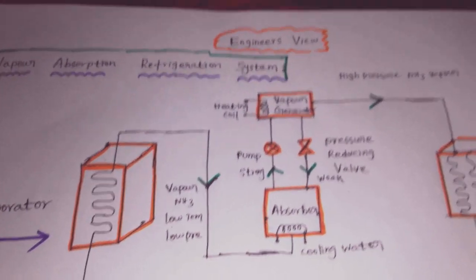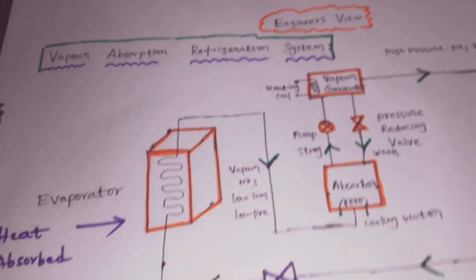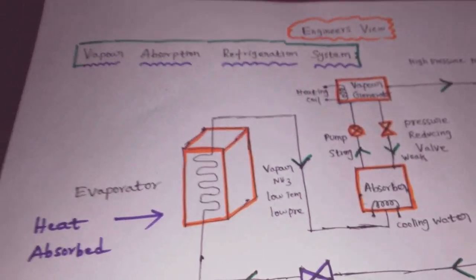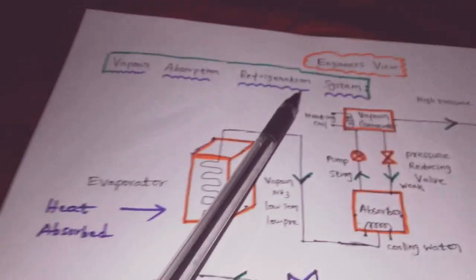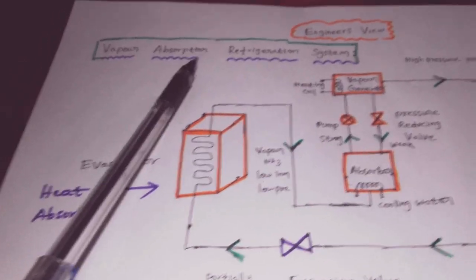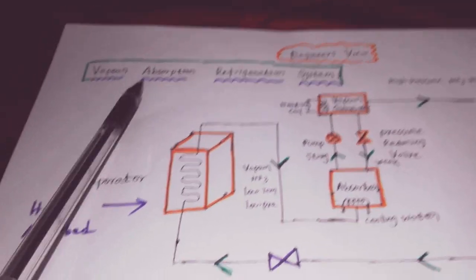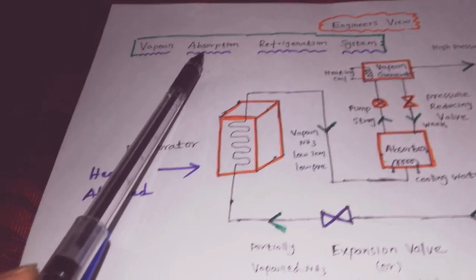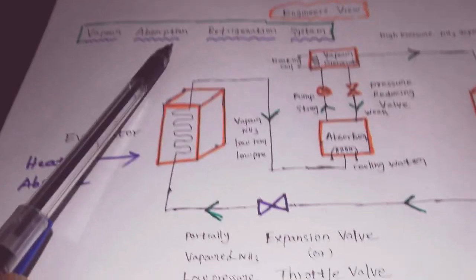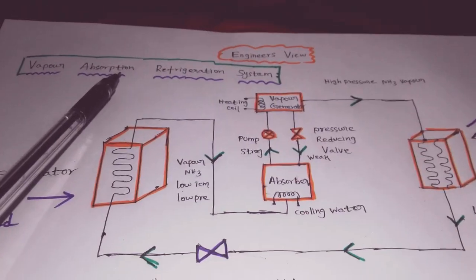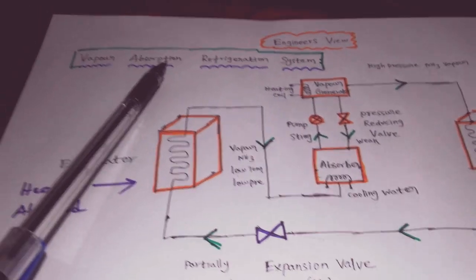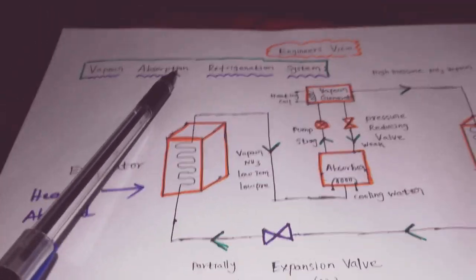Welcome to the Vapor Absorption Refrigeration System. There are two systems in refrigeration: one is the Vapor Compression Refrigeration System, which uses a compressor as the main component, and the other is the Vapor Absorption Refrigeration System.